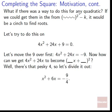First, move the 9 over: 4x² + 24x = −9. Now, how can we get 4x² + 24x to become (blank·x + blank)²? There's that pesky 4 in front, so let's divide it out. Dividing by 4: x² + 6x = −9/4. Confirming: 4x²/4 = x², 24x/4 = 6x, and −9/4 on the right.